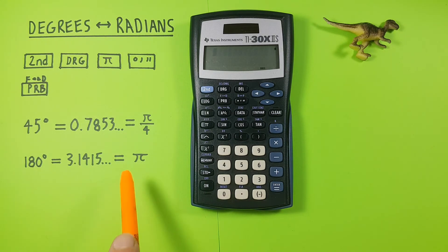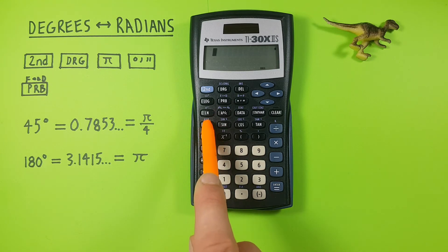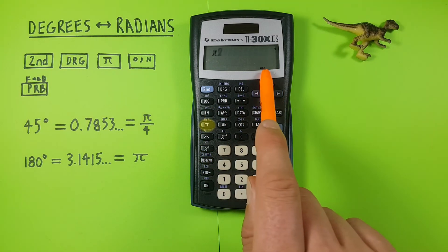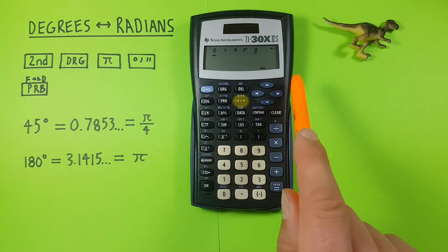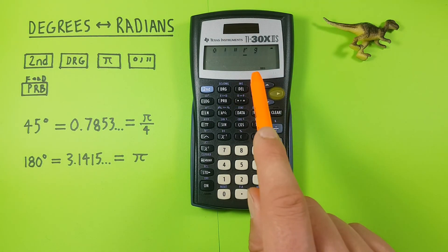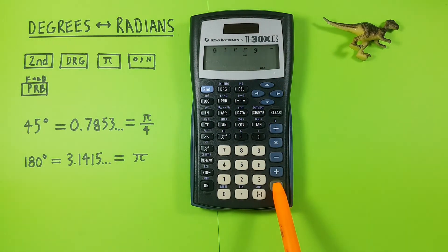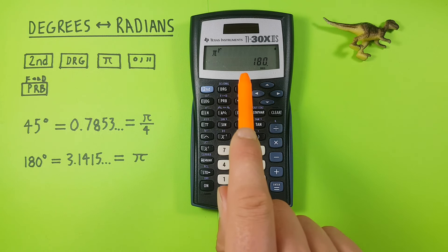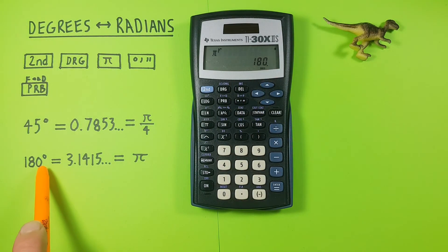Our other example, pi. Well we enter our pi on the screen, since we're already in degrees mode hit the degree key and tell our calculator we're using radians here, and press enter again and we see this converts to 180 degrees which is correct.